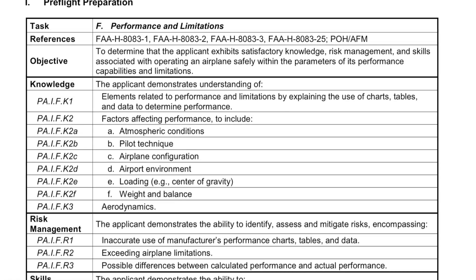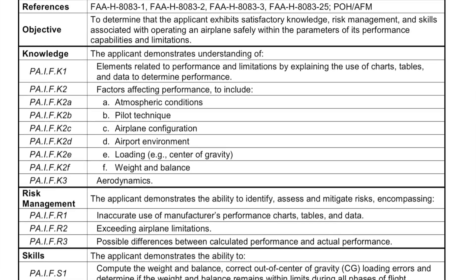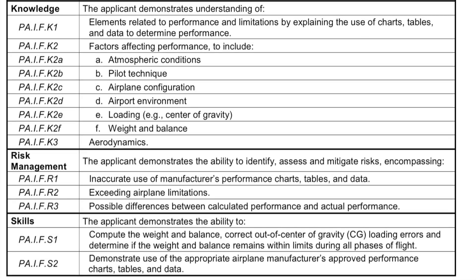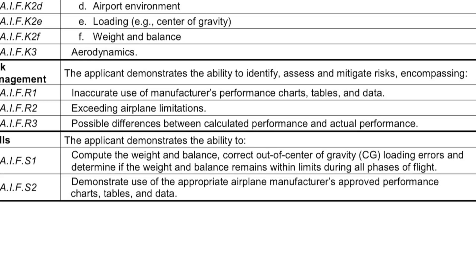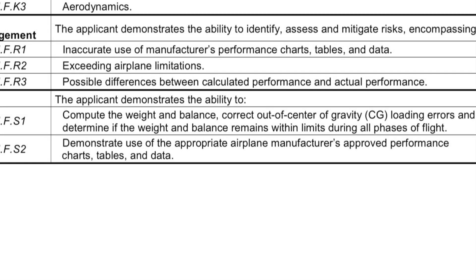However, Area of Operation Number 1, Task F, Skill Number 2 of the Private Pilot ACS specifically states that you must demonstrate use of the appropriate airplane manufacturer's approved performance charts, tables, and data. So your pilot examiner is going to expect that you can show your work manually.